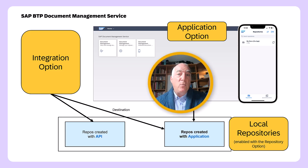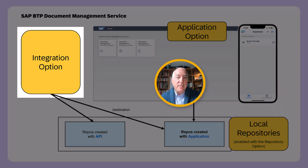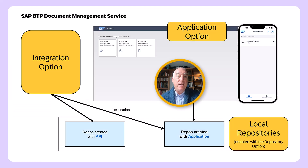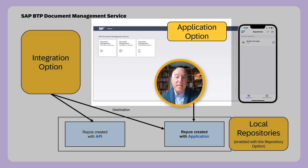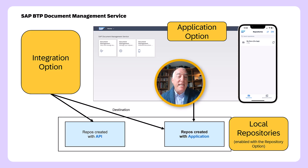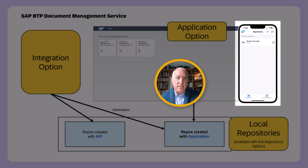In our first video, we talked about the API interface, which we got by installing the integration option of the document management service. In the second video, we talked about the GUI interface, which we got by installing the application option. Now, with the application option, we get a third interface, which is the mobile interface.